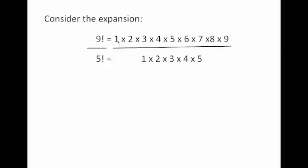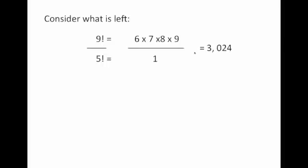How much is nine factorial divided by five factorial? In order to do that, we would need to expand it. Nine factorial is one times two, all the way up to times nine. Five factorial is one times two times three, all the way up to times five. So if we do a little bit of multiplication cross-reduction, we notice that nine factorial divided by five factorial leaves six times seven times eight times nine — all the rest cancel out. So nine factorial divided by five factorial equals 3,024.